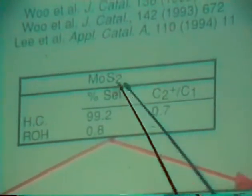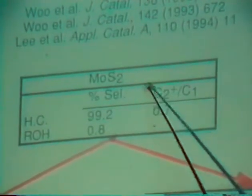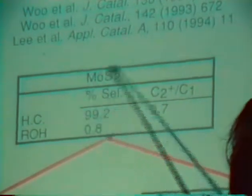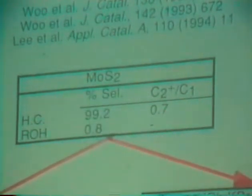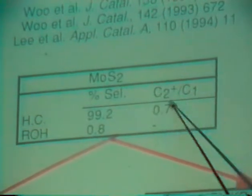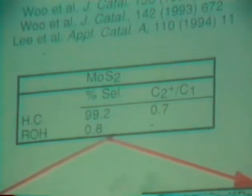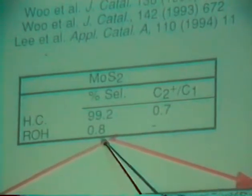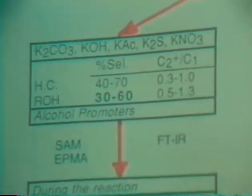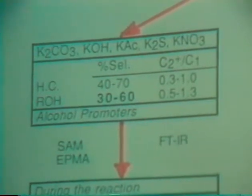Because most of you would not follow the work done in a remote area like Korea, I summarize what we have done for the last couple of years. Molybdenum disulfide itself, unsupported molybdenum, produces mostly hydrocarbons. The major product of hydrocarbon is methane. The ratio of hydrocarbons heavier than methane versus methane is 0.7, with very little alcohol formation. Now we introduced potassium in various forms.